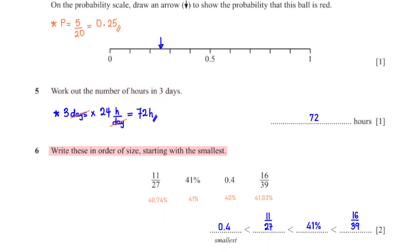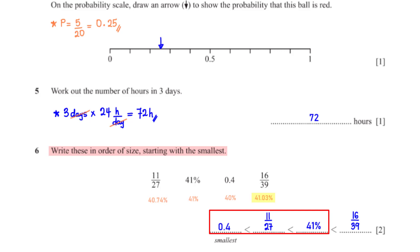Write these numbers in order of size, starting with the smallest first. We convert the numbers to percentages by multiplying each number by 100%. 41 is already a percentage, so we leave it as it is. The smallest number is 40%, which is 0.4, followed by 40.74%, which is 11 over 27, followed by 41%, followed by 41.03%, which is 16 over 39.